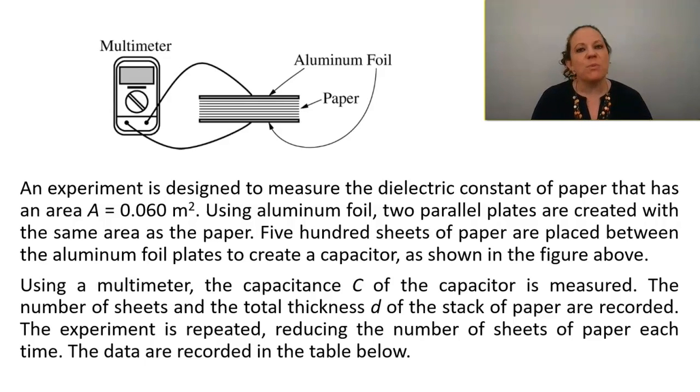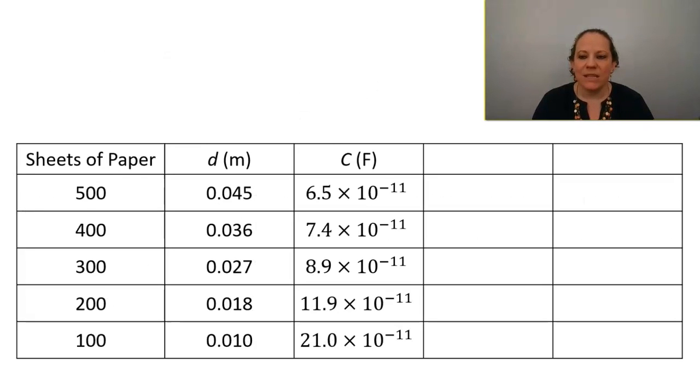The number of sheets and the total thickness D of the stack of paper are recorded. The experiment is repeated, reducing the number of sheets of paper each time. The data are recorded in the table below. So you can see here the data the student collected as far as number of sheets of paper, the thickness of the paper, and the measured capacitance in farads.